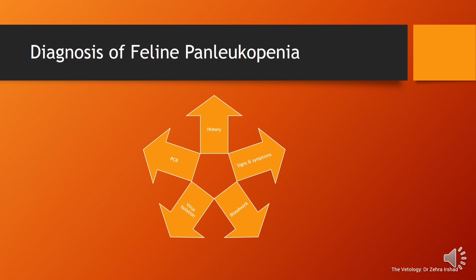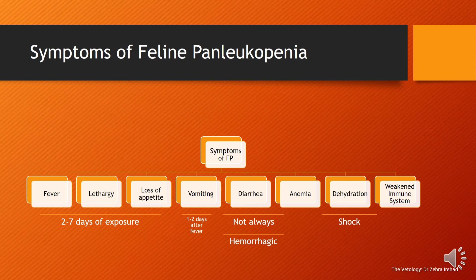Diagnosis can be made based on history, signs, and symptoms of the disease, along with blood work analysis. In blood work, you typically see low WBCs due to panleukopenia and low RBCs due to anemia. Virus isolation and PCR testing are also useful diagnostic tools.